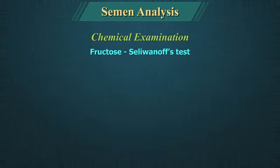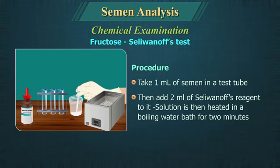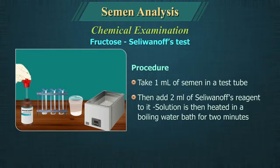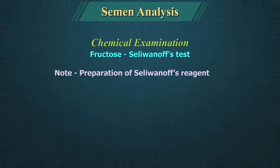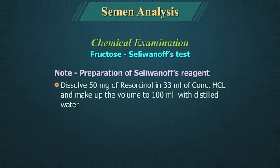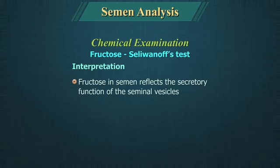Fructose using Selvanoff's test. Procedure: Take 1 ml of semen in a test tube, add 2 ml of Selvanoff's reagent to it, then heat in a boiling water bath for 2 minutes. A positive test is indicated by formation of a red product. For preparation of Selvanoff's reagent: dissolve 50 mg of resorcinol in 33 ml of concentrated hydrochloric acid and make up the volume to 100 ml with distilled water. Fructose in semen reflects the secretory function of the seminal vesicle.